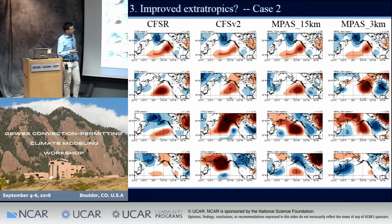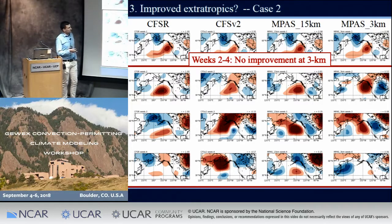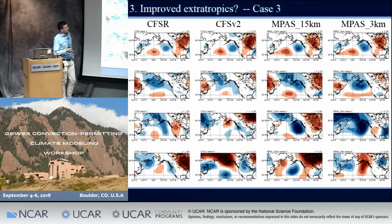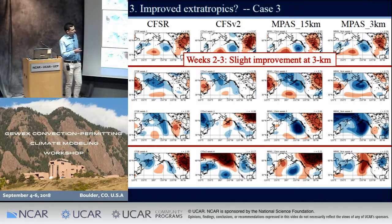For our second case, the 3-kilometer MPAS does not improve upon either of our runs with parameterized convection in weeks two through four — whether or not that's related to none of them capturing the MJO is something we'd really like to prove. For case three, we see maybe a little bit of improvement over the other two runs in the 3-kilometer MPAS in weeks two and three relative to the analyses, but not much improvement in week four.